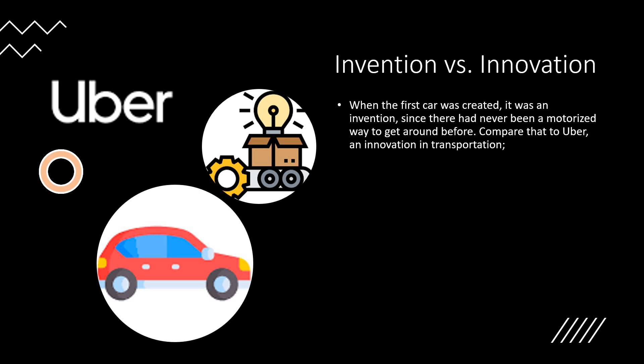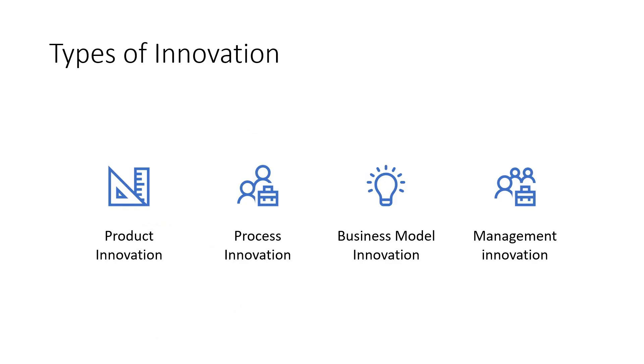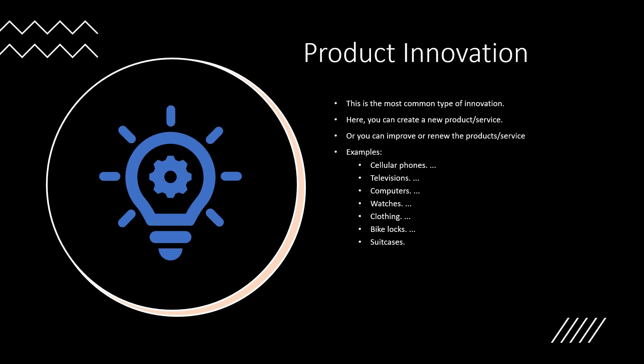The first time it was invented; the second time innovation came in that sector. When something is created for the first time, it is invention. But when you create further things all around that, that's called innovation. There are four types of innovations: product innovation, process innovation, business model innovation, and management innovation.